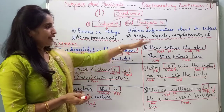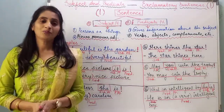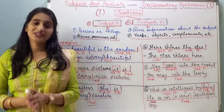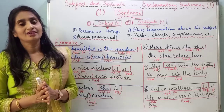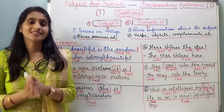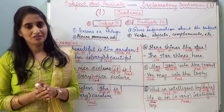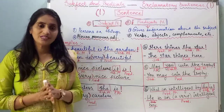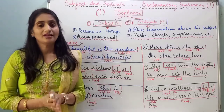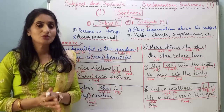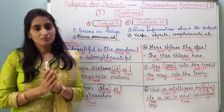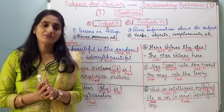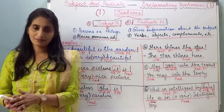In each of these sentences, the predicate part contains the verb. In this way, we have studied how to identify the subject and the predicate in declarative sentences, imperative sentences, interrogative sentences, and exclamatory sentences. Please go to the description box, where some sentences are given — convert them into statements and try to identify the subject part and the predicate part in them.